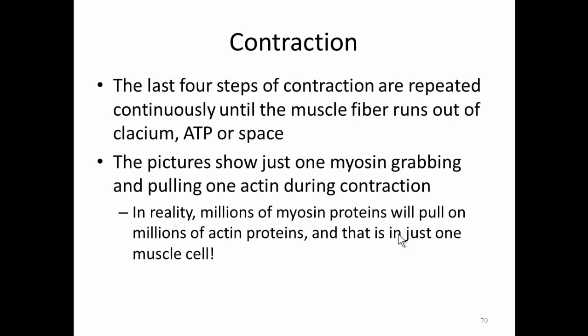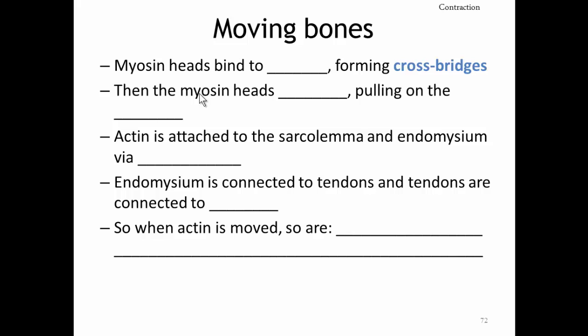The last four steps of contraction are repeated continuously until the muscle fiber runs out of calcium, ATP, or space. The sarcomeres can only shorten so much — once the thin filaments reach the center of the sarcomere, there's no more room. In reality, millions upon millions of myosin proteins are grabbing and pulling onto millions of actin proteins, and that's just in one cell. Not every myosin is doing the same thing simultaneously — one myosin might be cocking while another is pulling while another is letting go. There's always at least one myosin holding onto the thin filament.